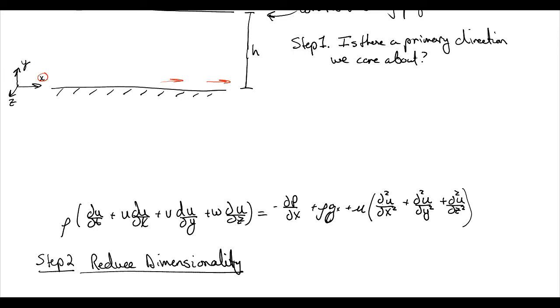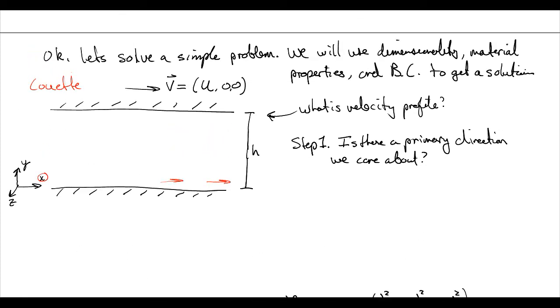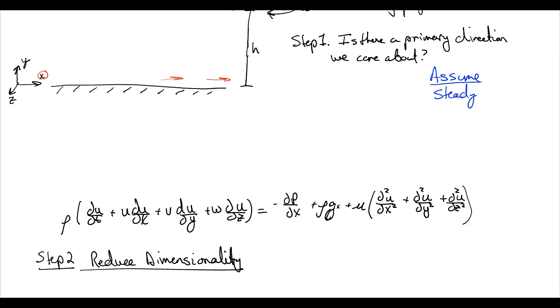And now we're going to go about simplifying the Navier-Stokes equation. All right, so one of the things we're going to assume is steady state, since for all we know, this top plate has been moving and will continue moving for all time. So we have no component on time here. That's equal to zero.